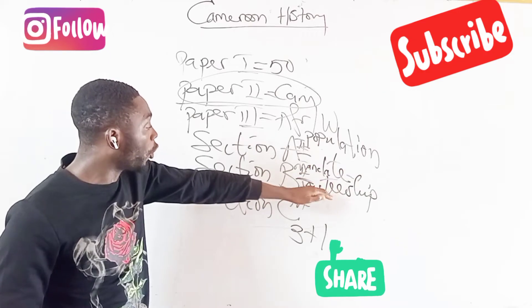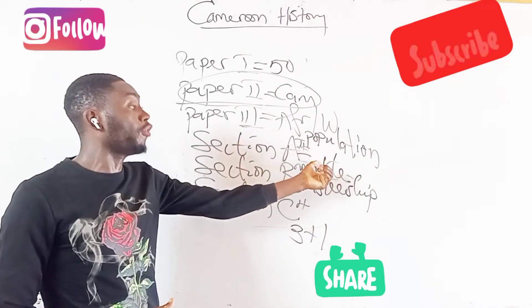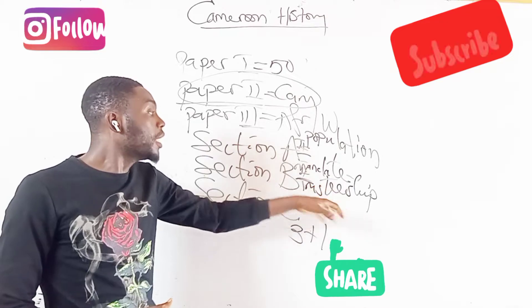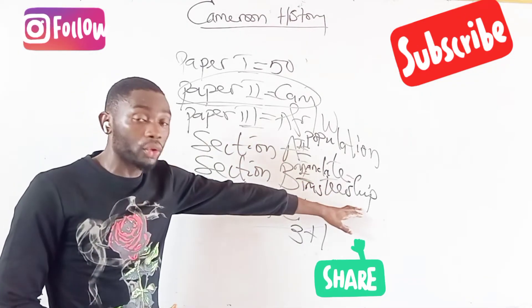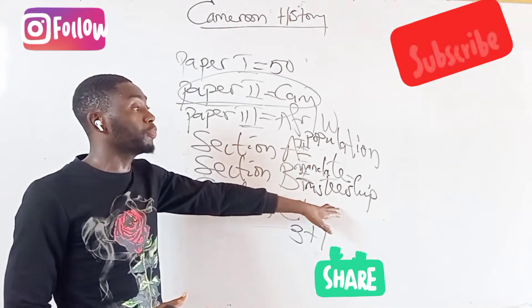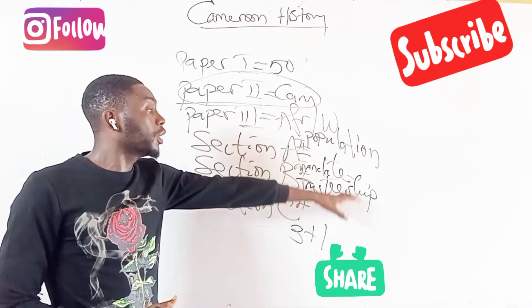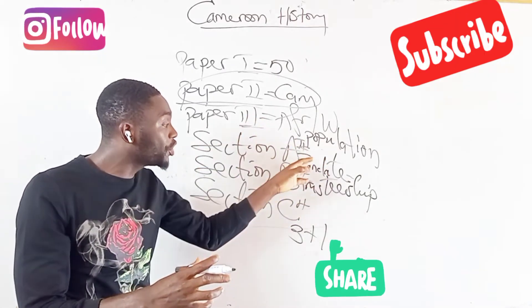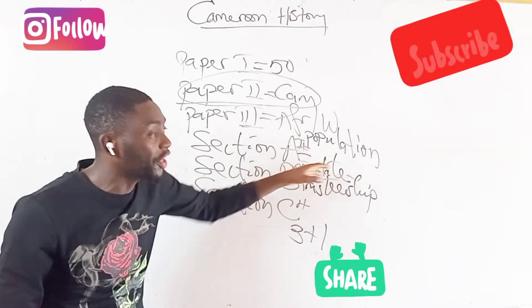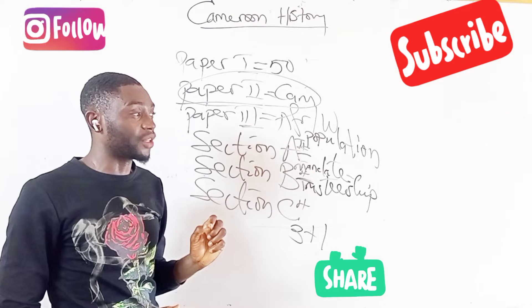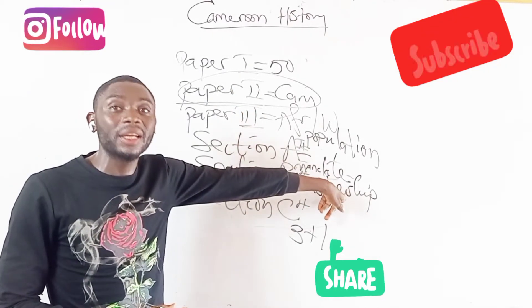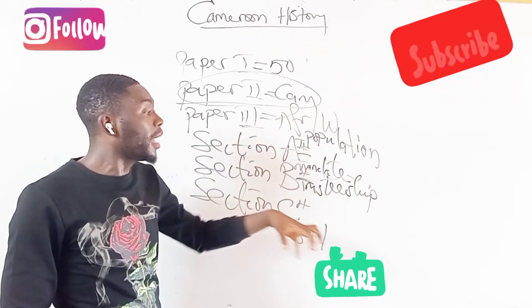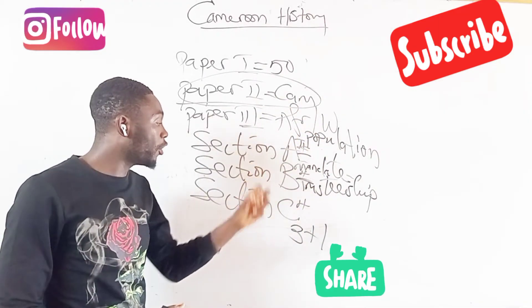In section B, one question out of four will come from the mandate in British Southern Cameroon and another from the trusteeship in British Southern Cameroon. The same applies to French Cameroon — the mandate in French Cameroon gives one question while the trusteeship in French Cameroon gives another, making four questions in total. As a student, you should already be aware of exactly which question to expect in each sub-section of section B.